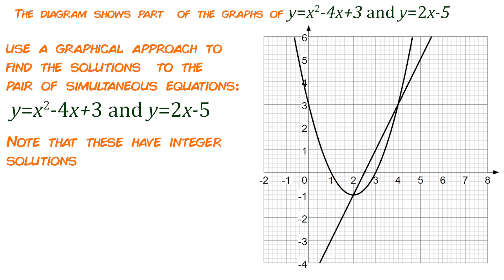The diagram shows parts of the graph of y equals x squared minus 4x add 3 and y equals 2x minus 5. Use a graphical approach to find the solutions to the simultaneous equations and then it's those same two equations that we were given at the start. And then it says note that these have integer solutions so we're looking for some whole numbers here. All we've got to do is to look for the two points where the lines intersect.